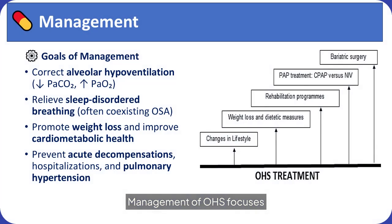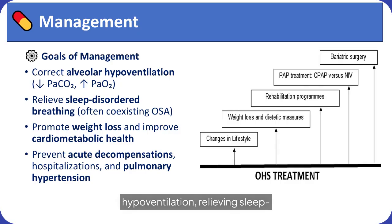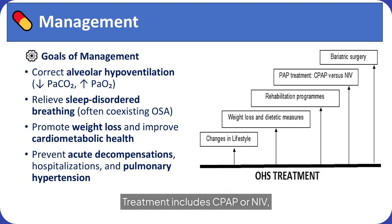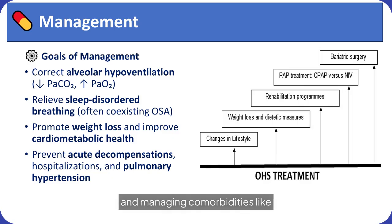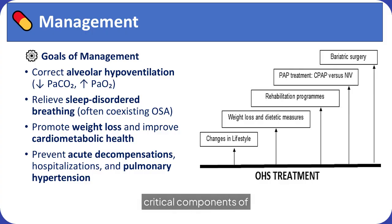Management of OHS focuses on correcting alveolar hypoventilation, relieving sleep-disordered breathing, and promoting weight loss. Treatment includes positive airway pressure, lifestyle changes, and possibly bariatric surgery. Preventing acute decompensations and managing comorbidities like pulmonary hypertension are also critical components of care.